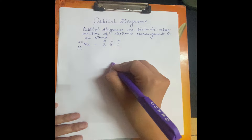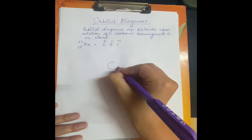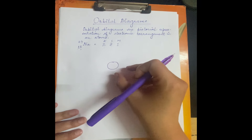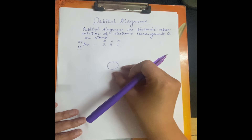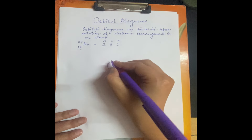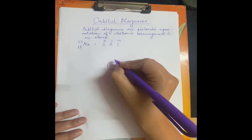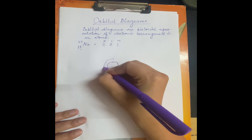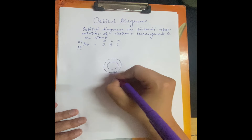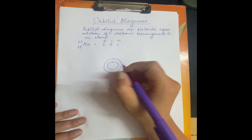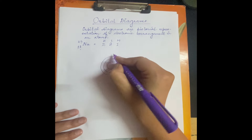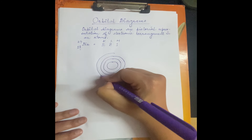To represent this as a diagram, we need to draw circles. You can draw it in any way, but normally when you are starting to practice orbital diagrams, you first draw one circle which is your nucleus. Then from there you draw the first shell (K shell), then the L shell, and after that the last shell, which is the M shell.